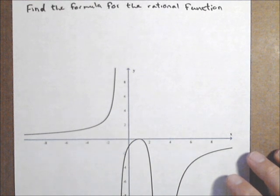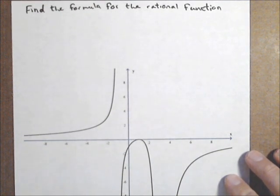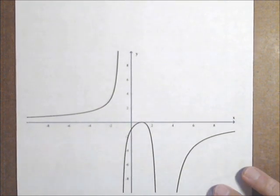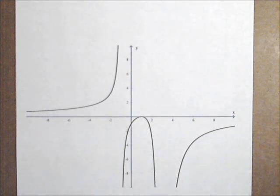This is another example of finding the formula for a rational function given a graph. So we have our graph here, and we want to attend to all the major components.